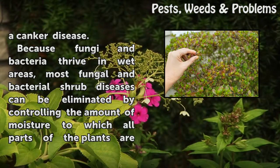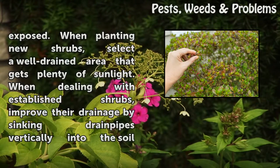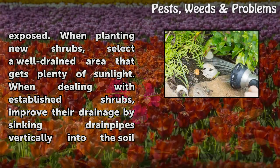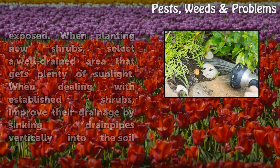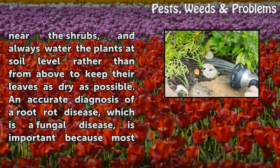Because fungi and bacteria thrive in wet areas, most fungal and bacterial shrub diseases can be eliminated by controlling the amount of moisture to which all parts of the plants are exposed. When planting new shrubs, select a well-drained area that gets plenty of sunlight. When dealing with established shrubs, improve their drainage by sinking drain pipes vertically into the soil near the shrubs, and always water the plants at soil level rather than from above to keep their leaves as dry as possible.